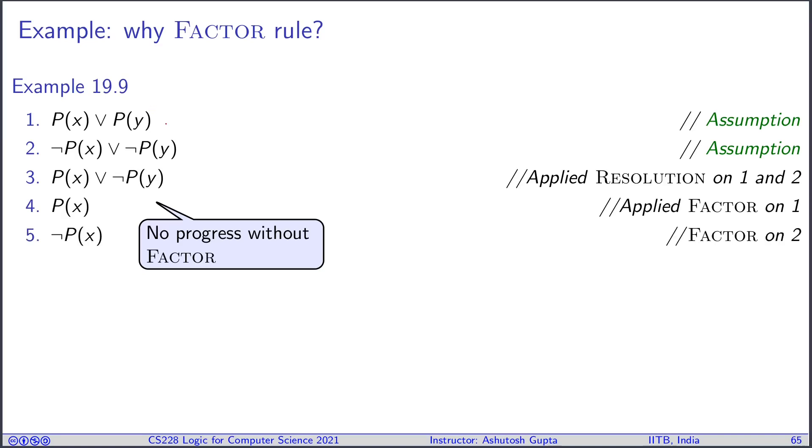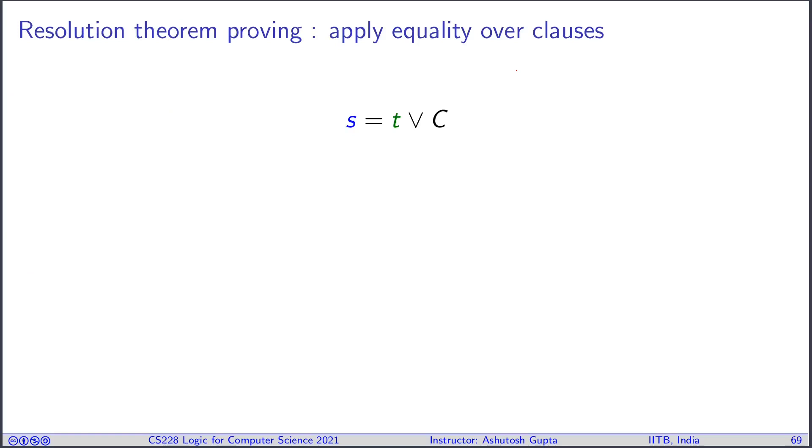Then you get P(X), and then a similar thing you do on clause 2, you get not P(X), and then now you get false. So the factor rule is essential. Without that, you will not achieve completeness. So we have seen three proof rules so far. One introduces the clause in the system, two of them for resolution, and now let's think about equality.